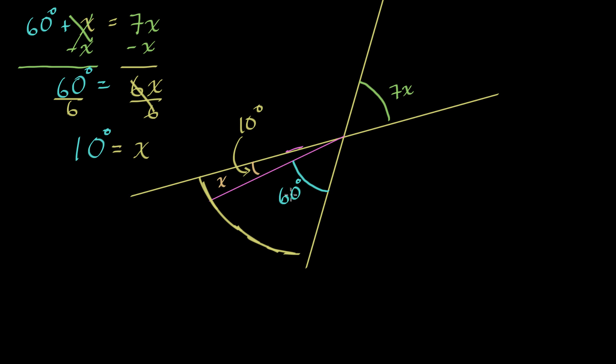So this one right over there is 10 degrees. This is, of course, 60 degrees. You add them together, 60 degrees plus 10 degrees is 70 degrees. So this bigger angle right over here is 70 degrees. And of course, this one over here, it's a vertical angle. It's going to have to be the same. And we see that. 7 times x, 7 times 10 degrees is 70 degrees as well.